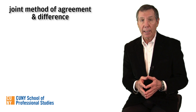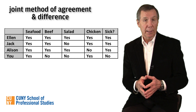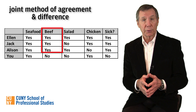Mill's third method for causal discovery, the joint method, applies both the method of agreement and the method of difference as represented by our table. As you can see, all those who consumed beef got sick, and the only person who did not fall ill did not eat beef.